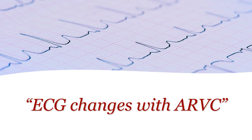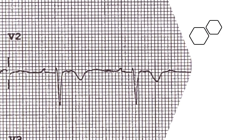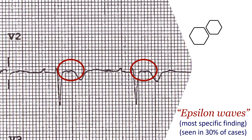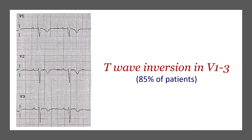Let's talk about the ECG changes in arrhythmogenic right ventricular cardiomyopathy. The first abnormality is the notch at the end of the QRS complex at the beginning of the ST segment — these are called epsilon waves. They are the most specific finding in ARVC but are seen in only 30% of cases. The other finding is T-wave inversion from V1 to V3, seen in about 85% of patients. All findings are in the right precordial leads because the pathology is in the right ventricle.